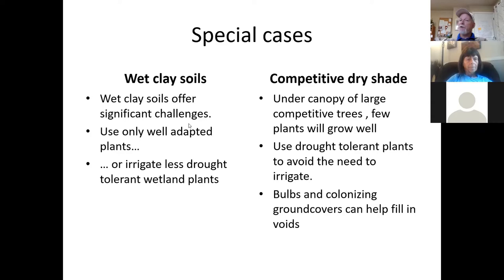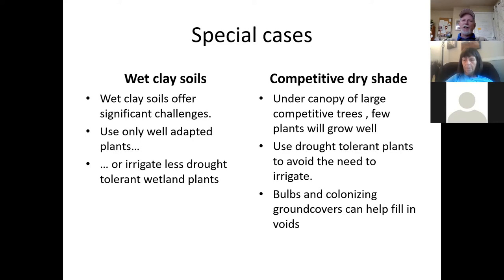We have a number of these wet clay soil sites throughout the valley, but there are native plants that grow in them. Typically in wet clay soils you use well-adapted plants, substantially change the soil, or take wetland plants and irrigate them in summer to prevent dehydration. Another challenging site is the competitive dry shade under the canopy of Douglas fir or native bigleaf maple — not a lot of plants thrive there. You typically need plants that are both drought tolerant and shade tolerant, which is a pretty small palette.